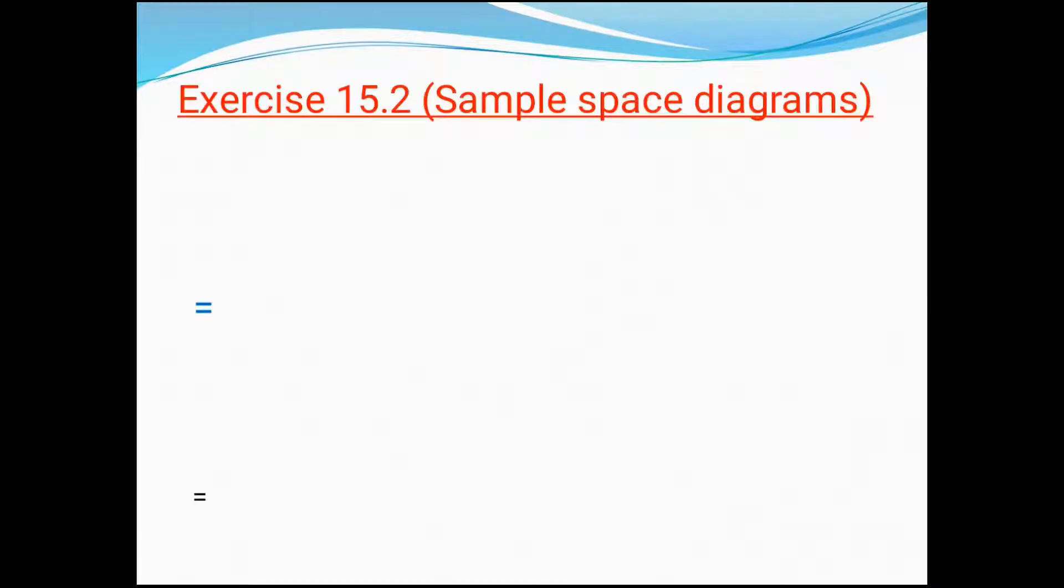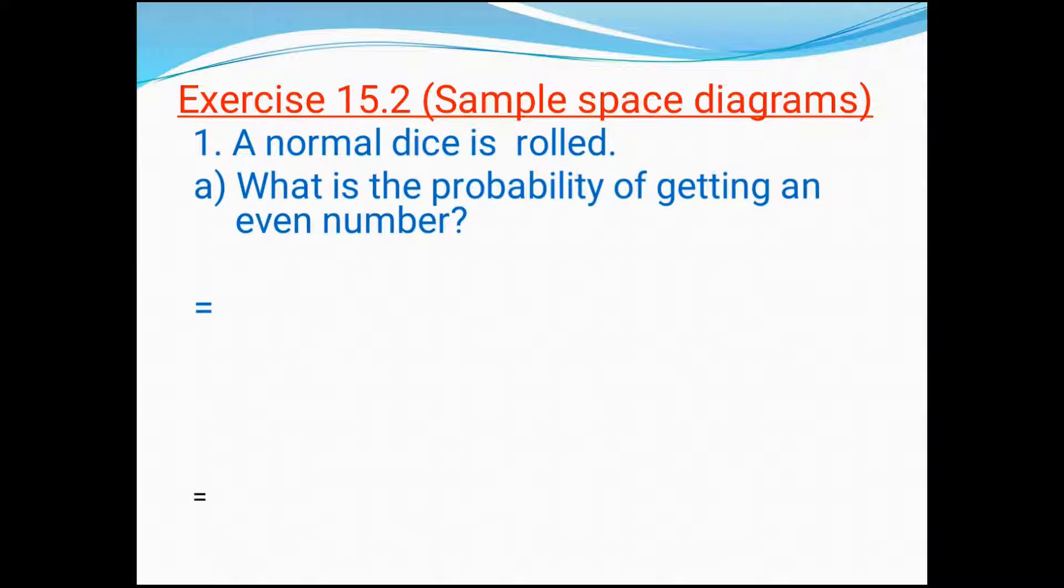Let's enter Exercise 15.2, sample space diagrams. The first one: a normal dice is rolled. We know that a dice has six numbers. Now they are asking, what is the probability of getting an even number? How many even numbers do we have in a dice? Two, four, six - that means three numbers. So we can tell that three by six, which we can write as one by two. So you can write three by six or one by two, no problem.